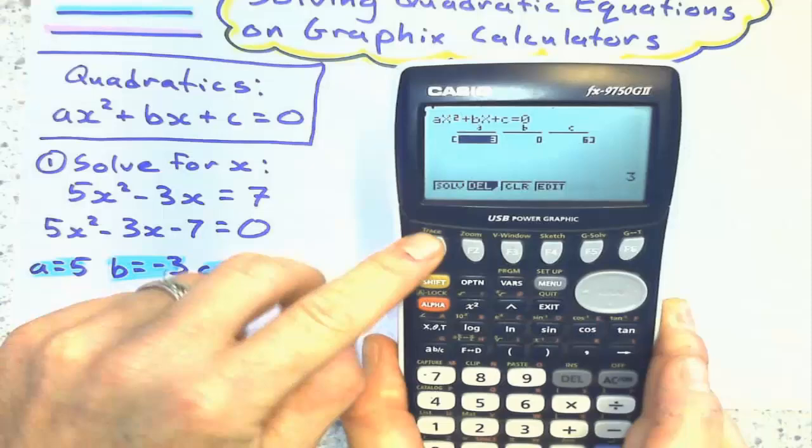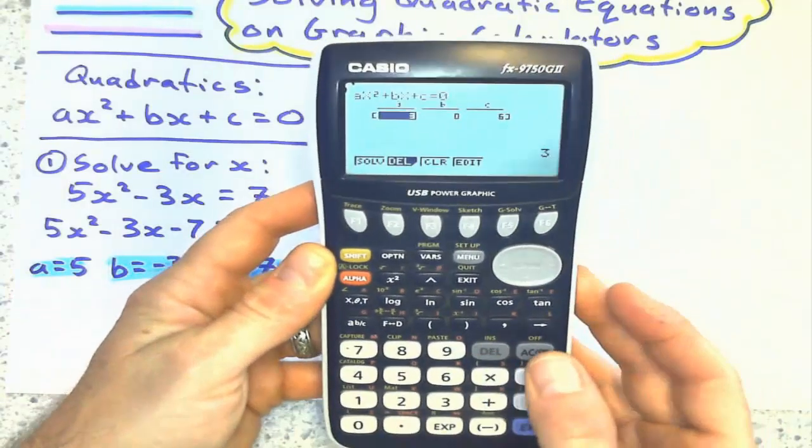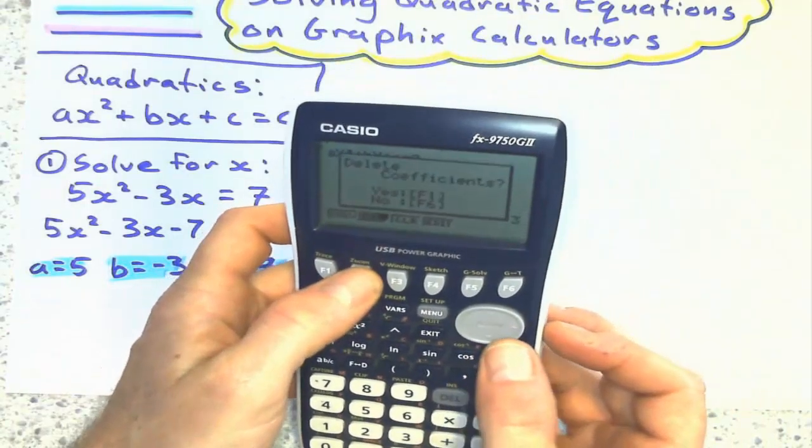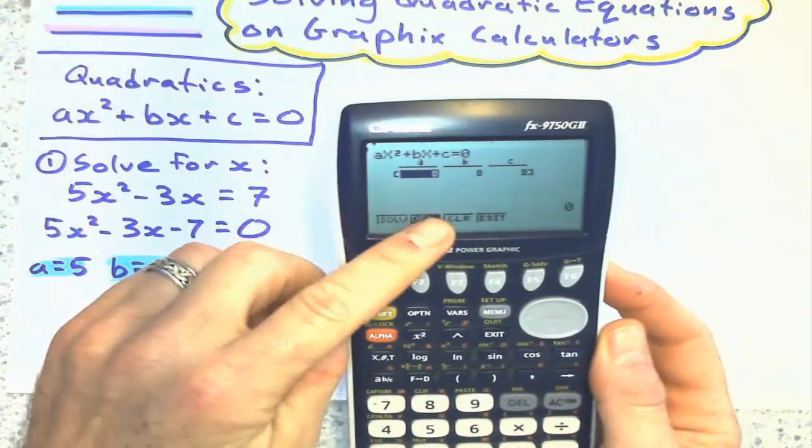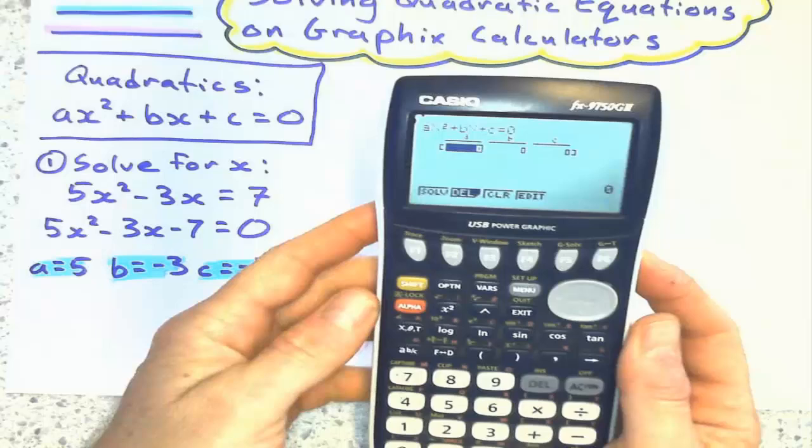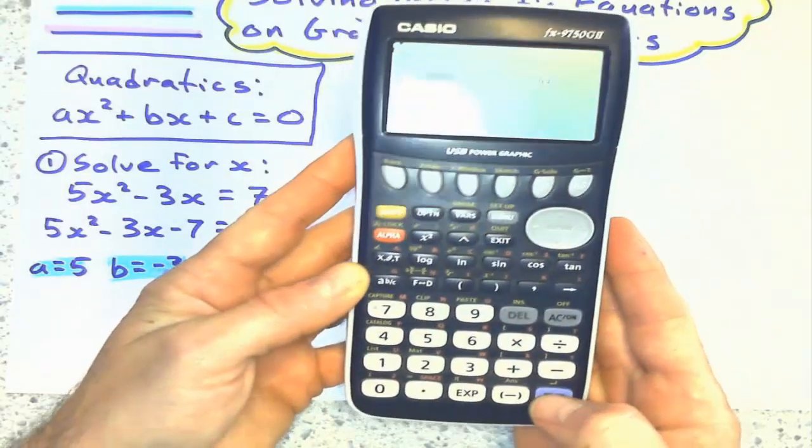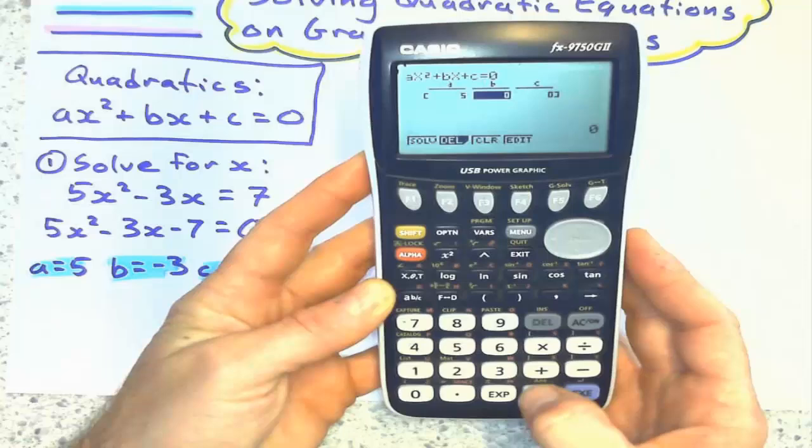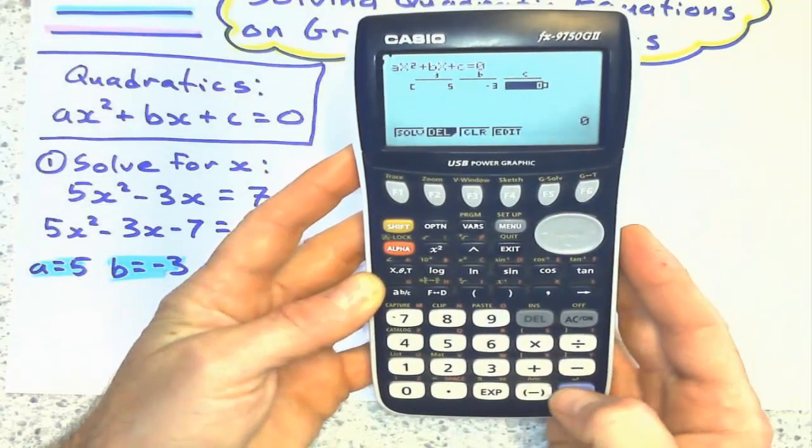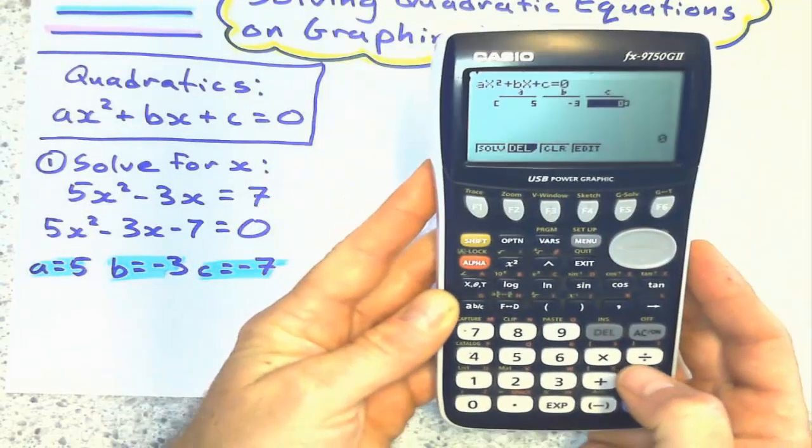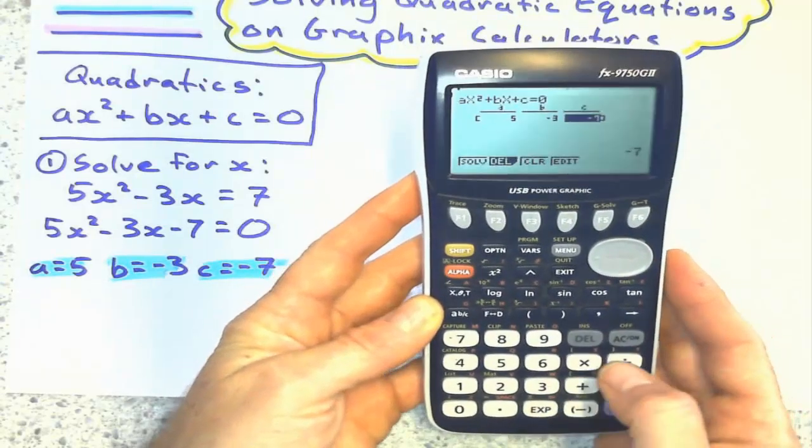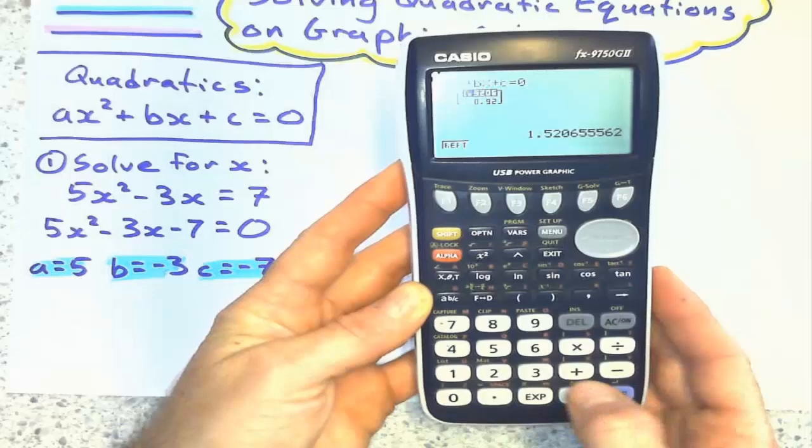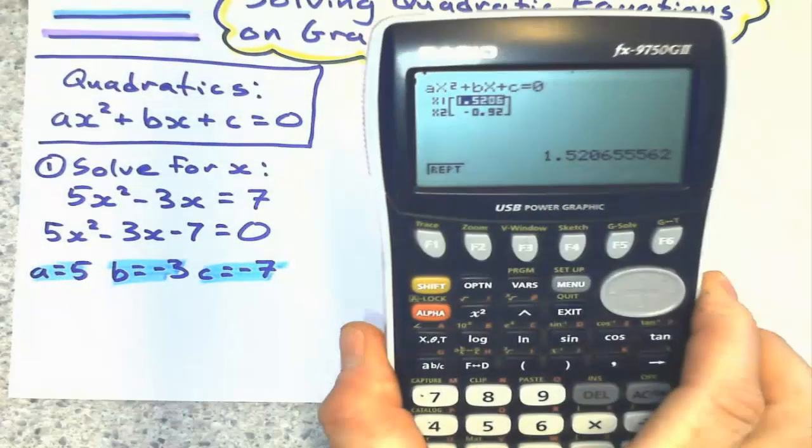So I press F1 for 2. And now I'm going to delete this, because that's another problem there. And I'm just going to plug in A, B, and C. A is 5, so I press 5, execute. And then negative 3, execute. And negative 7, execute. After that last execute, press it again, and I get my roots.